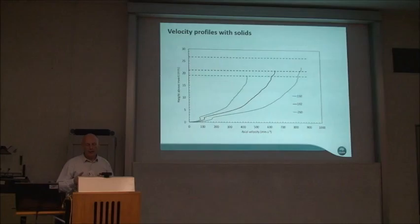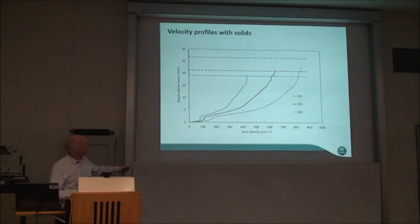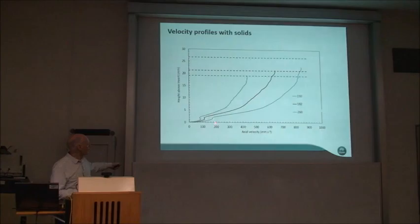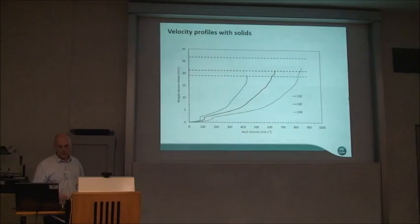We also noticed that UDP velocity profiles were slightly different once we started putting particles in. Looking at different volumetric flow rates from low to very high, the depth gets greater as expected at a constant angle. But instead of being monotonic, we now have a bump occurring in the velocity profile, and regardless of volumetric flow rate it occurs at about the same depth — which was interesting to us.